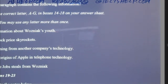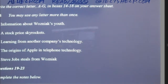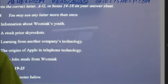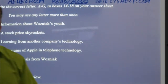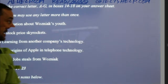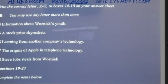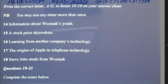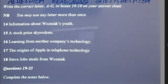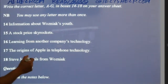Now let's see how well we kept that visual image and can answer the questions. Question 14: information about Wozniak's youth — which paragraph did we get that from? I have a pretty good idea. I know it was in the beginning. Hassan says A, but I don't think it was A, Hassan — remember, A was about the brains of the company. The popular vote here is B. I agree — B.